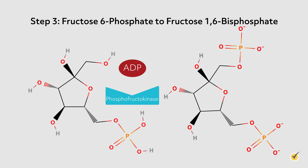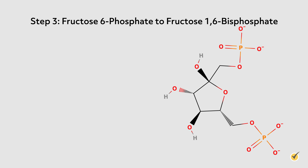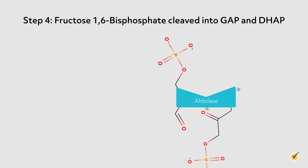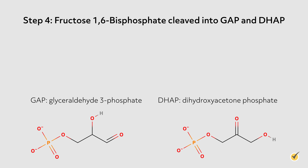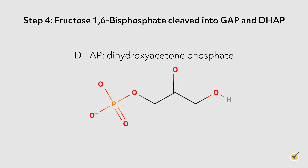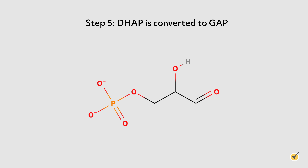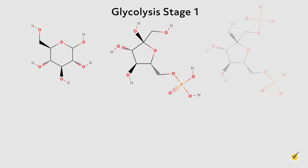Step three: fructose-6-phosphate is converted to fructose-1,6-bisphosphate by another round of phosphorylation, which means both sides of the chain now have a phosphate group attached. This step traps the molecule in the fructose form and uses one molecule of ATP. Step four is the actual cleavage step: fructose-1,6-bisphosphate is cleaved into GAP and DHAP. Only the GAP molecule is ready for the next stage of glycolysis; DHAP requires further processing in step five. Step five: DHAP is converted to GAP so that it too can continue through glycolysis. And with that, we've finished up the first stage of glycolysis.